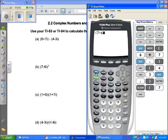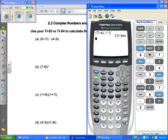7-6i. And then you can either hit the square key or the arrow up in the square. Either way. And for that one, we get the answer of 13-84i. Okay, so that takes care of part B.